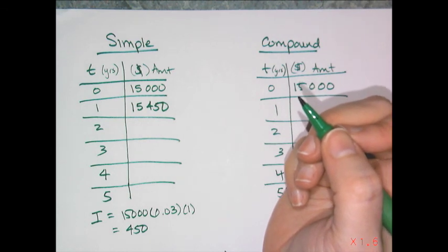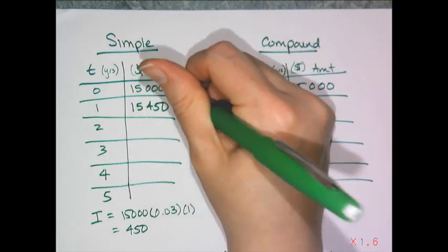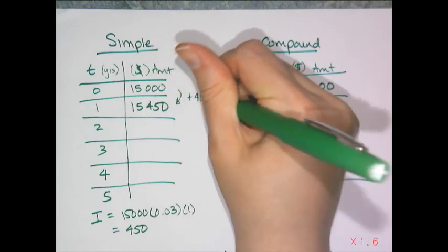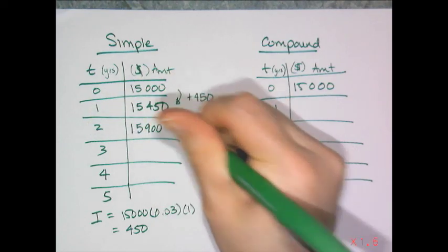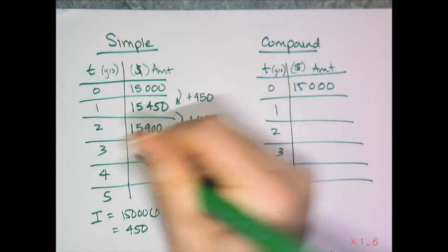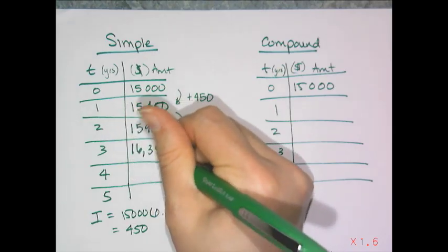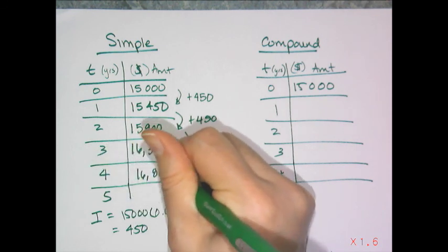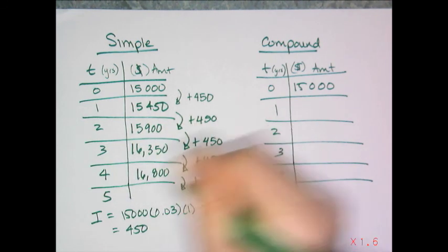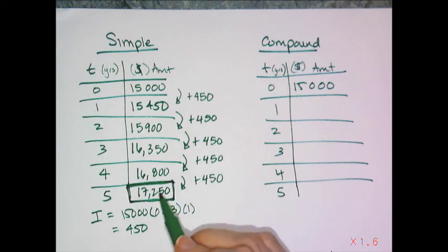After year one, simple interest owes $15,450. With simple interest, each year the same $450 is added because interest is always calculated on the original $15,000. So year two is $15,900, year three is $16,350, year four is $16,800, and at the end of five years you owe $17,250 total.